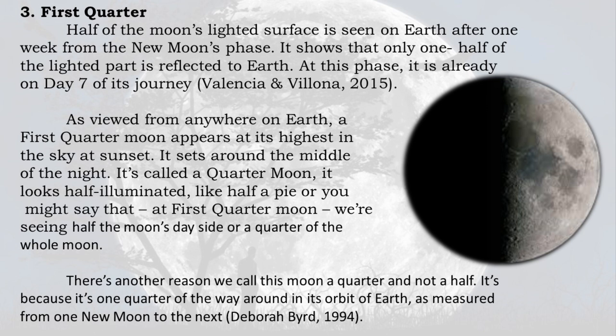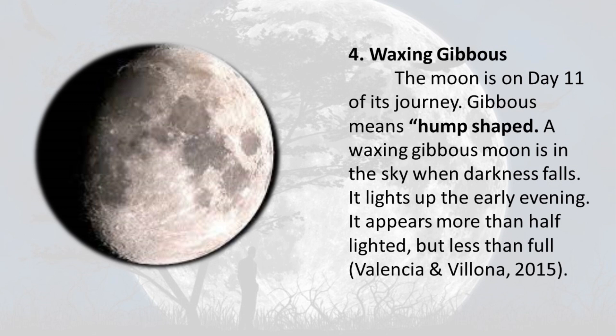Phase 3 — First Quarter: Half of the moon's lighted surface is seen on Earth after one week from the new moon phase, showing that only one half of the lighted part is reflected to Earth. At this phase it is already day 7 of its journey. A first quarter moon appears at its highest in the sky at sunset and sets around the middle of the night. It is called a quarter moon because it's one quarter of the way around in its orbit of Earth, as measured from one new moon to the next.